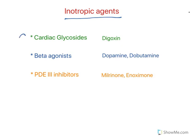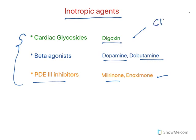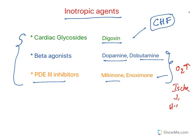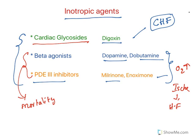For inotropic agents, there are three major classes: cardiac glycosides — example digoxin; beta agonists — examples dopamine and dobutamine; and PDE3 inhibitors — milrinone and enoximone. Out of these, cardiac glycosides are majorly used to treat chronic congestive heart failure, but not the other two. The reason is that both beta agonists and PDE3 inhibitors increase oxygen demand. When oxygen demand is increased, it may result in ischemic injury and further aggravate heart failure — in fact, these two agents increase mortality of congestive heart failure. So they are not used.